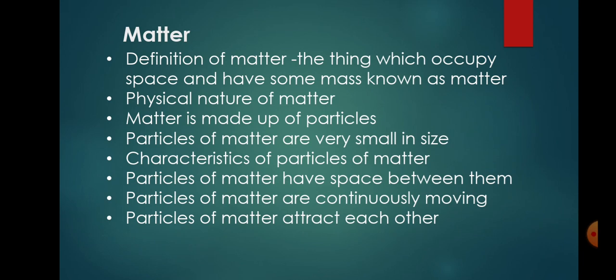Now, the definition: as we know, the things which occupy space and have some mass are known as matter. Any object that occupies space and has some mass is called matter. The physical nature of matter shows that matter is made up of tiny particles — chute chute particles — and particles of matter are very small in size.